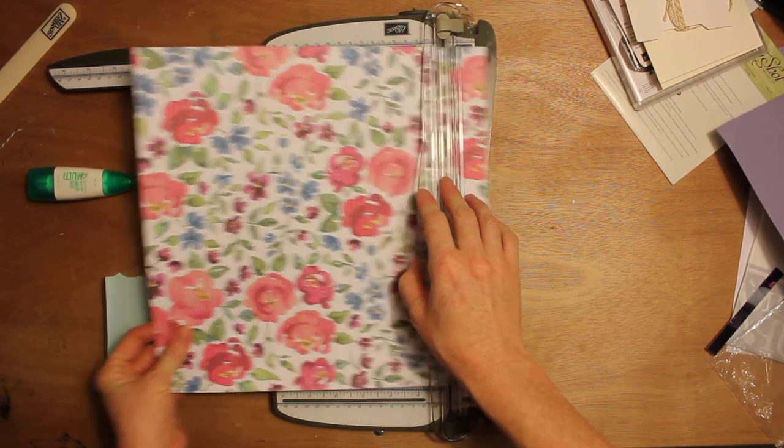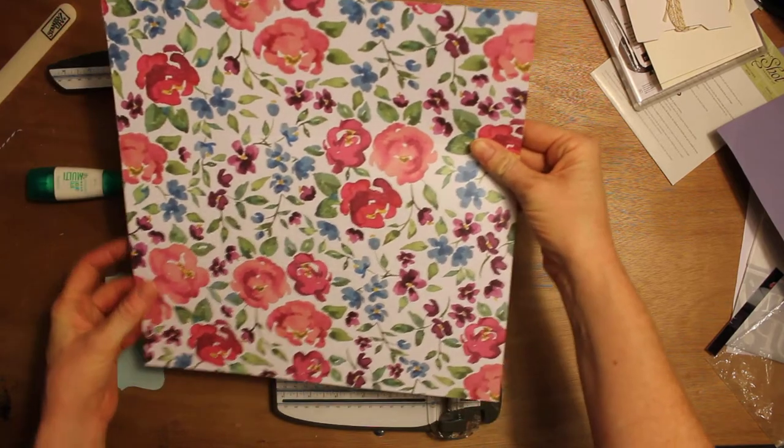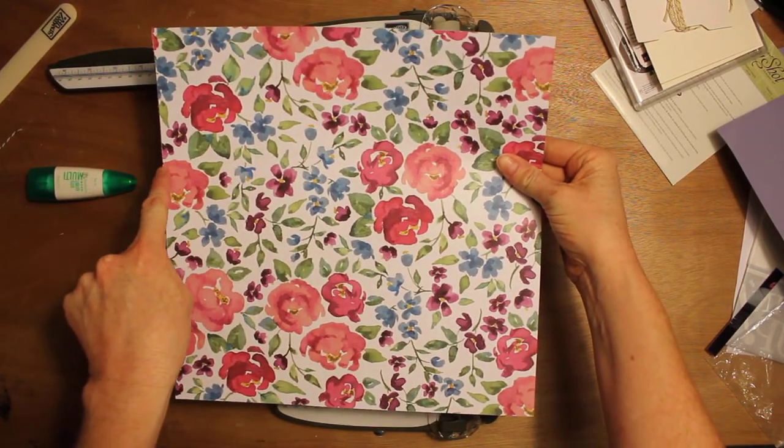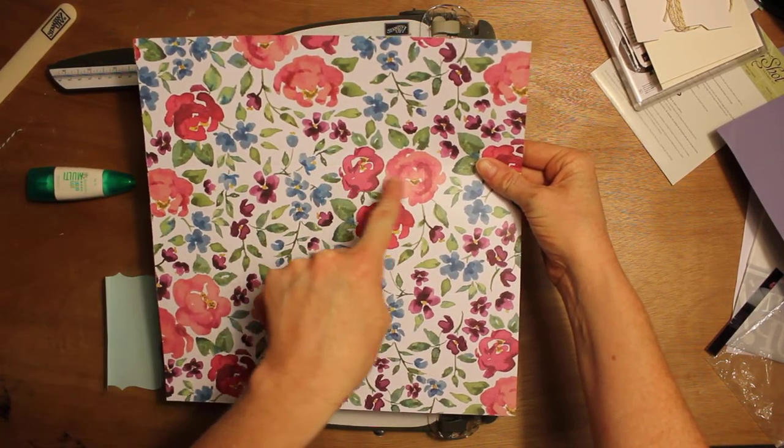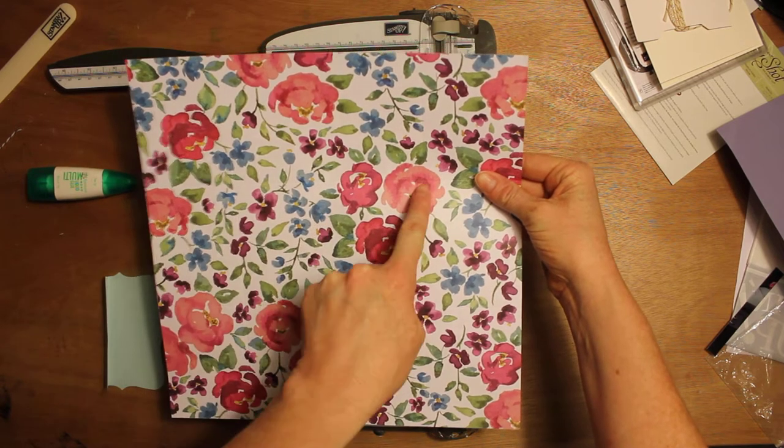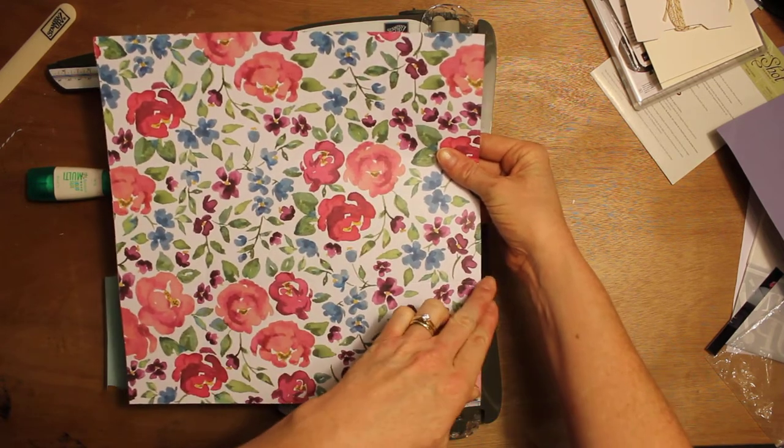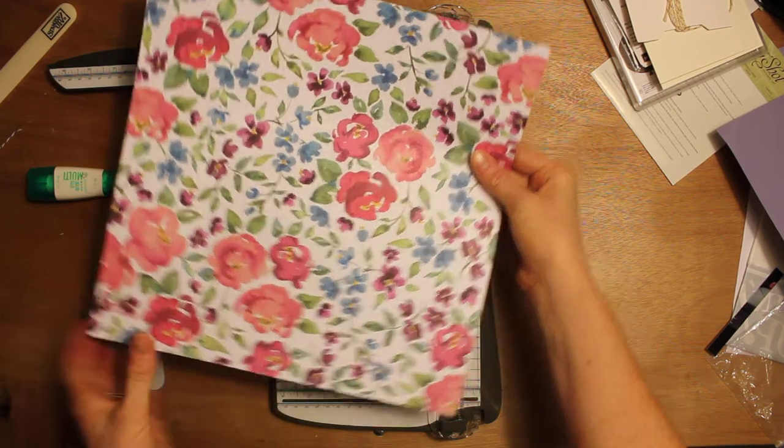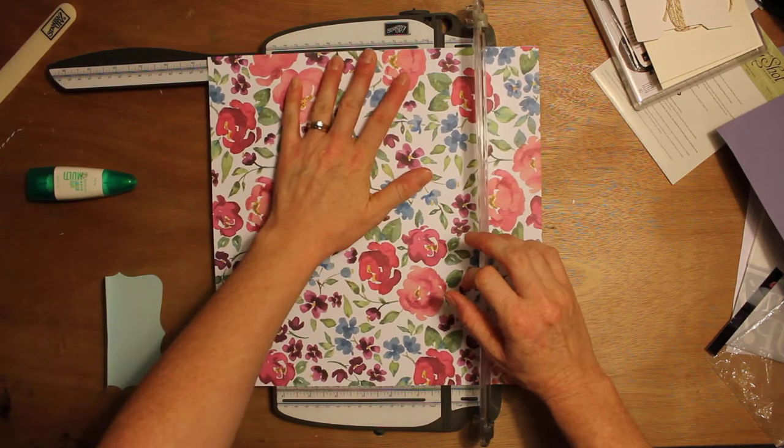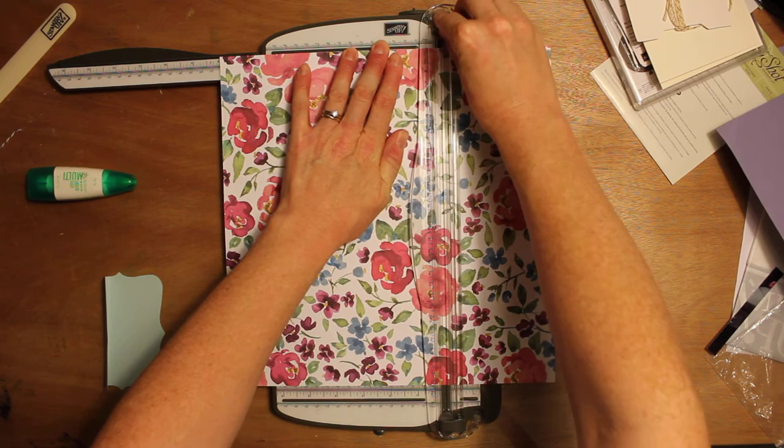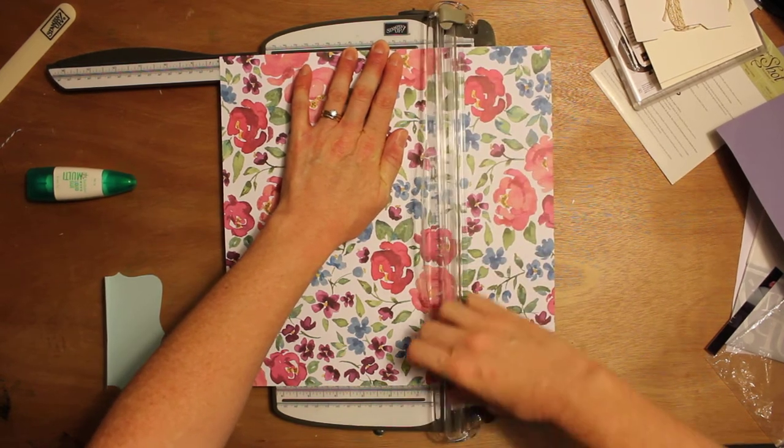Now all you need to do is turn your paper and what you're going to be doing is cutting from this edge in 3 squares to here, and from this edge in 3 squares to here. This one.